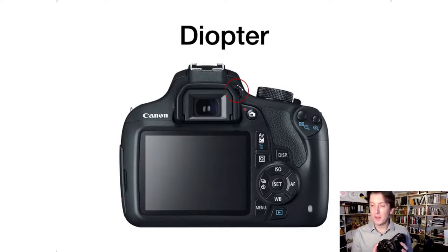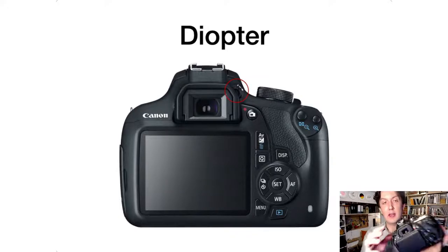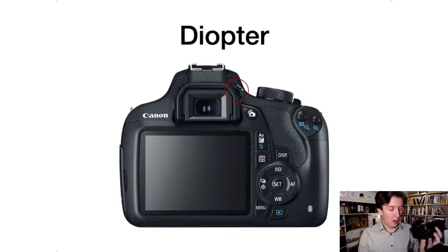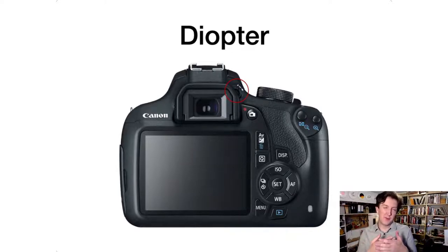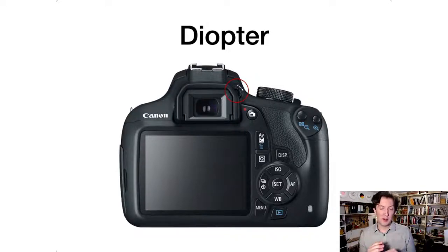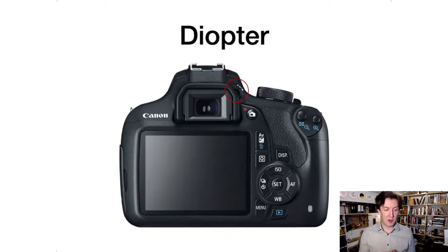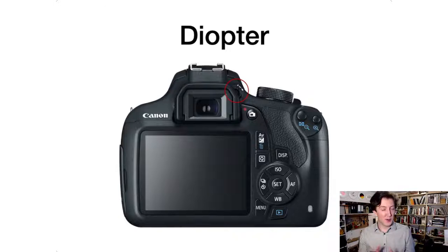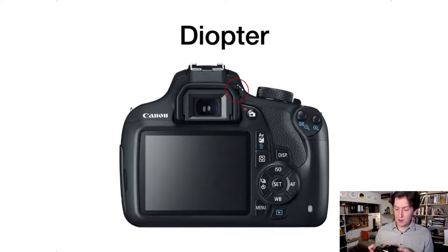The diopter is the most commonly mis-set thing on a camera. On a Canon it's a little dial at the top right-hand corner of the viewfinder. It allows people who wear glasses to control the prescription-like focus when looking through the lens — you can either keep wearing glasses or take them off and dial in your correction. It's the most common mistake beginners make — if the diopter is set incorrectly, everything looks out of focus when it's actually in focus. To set it correctly, turn on the camera, half-press the shutter button until you see the numbers through the viewfinder, and then adjust the diopter until those numbers are as sharp as possible.